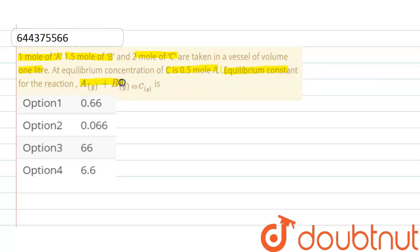And the reaction is A plus B gives rise to C. So here we have to find out equilibrium constant of the reaction. The reaction is A plus B gives rise to C.